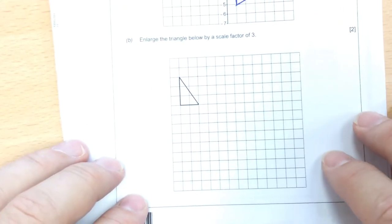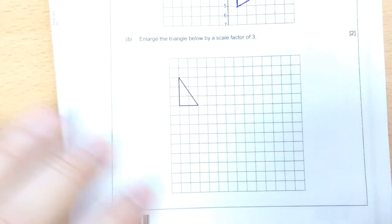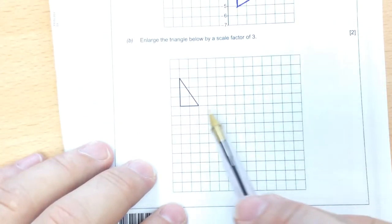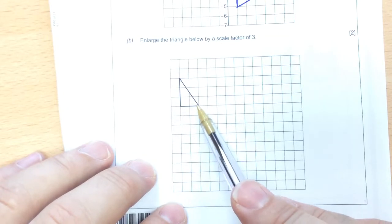Right. Enlarge. If you're enlarging something, it makes it bigger. So what I've got to do is make that whole shape 3 times bigger. So I'm going to pick a point to start from. I'm going to pick this bottom corner. But everything has got to become multiplied by 3.